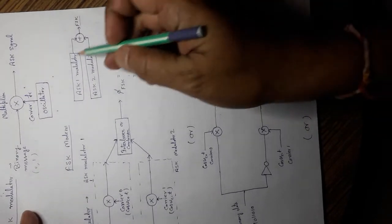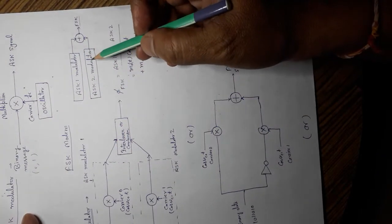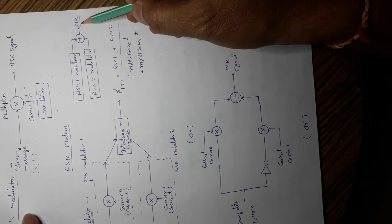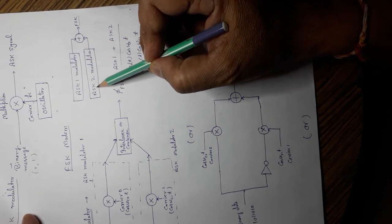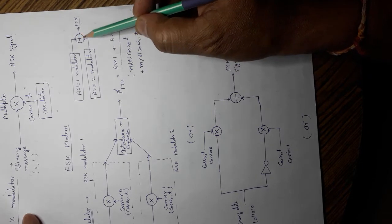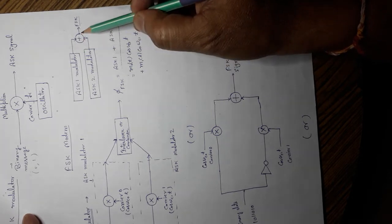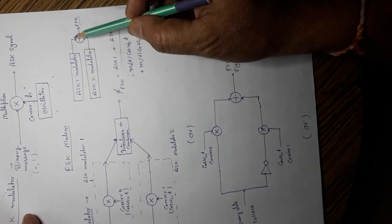These are the non-coherent method, which we have already discussed. FSK will be generated with the help of ASK 1 modulator, ASK 2 modulator and by the combination of both of these outputs.